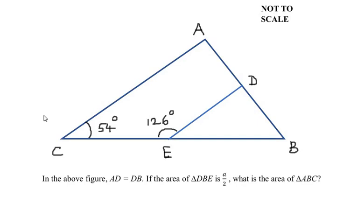Hello and welcome to my channel. In this video we are going to solve an example on similarities. In the above figure, AD is equal to DB, which means if I take the entire length of AB as two units or two centimeters, then it breaks down as one centimeter for AD and one centimeter for BD. If the area of triangle DBE is A over 2, what is the area of triangle ABC?